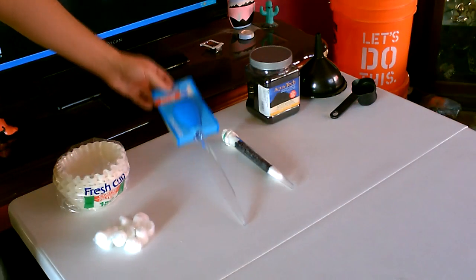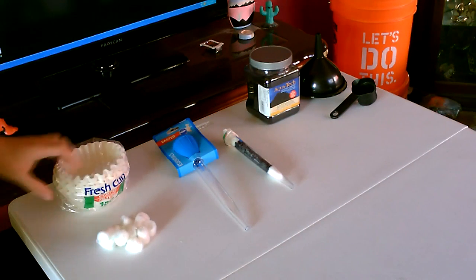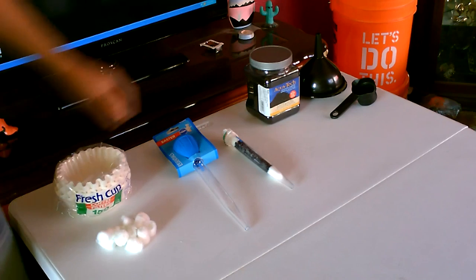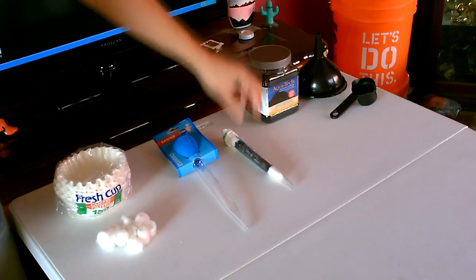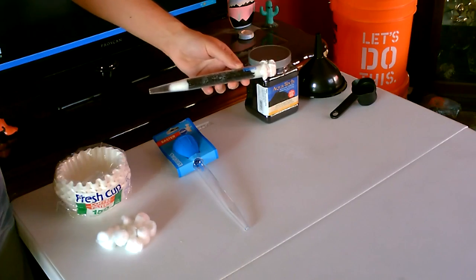Hey there, this is a quick video to show you how just using a turkey baster, some cotton balls or coffee filters and some activated carbon, you can make this really cool straw-like water filter.